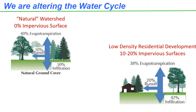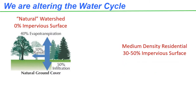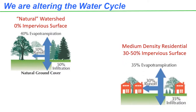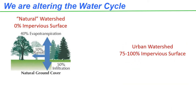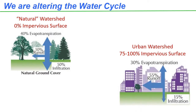In a low density residential development, like you'd see in a rural area, the proportion of rainfall that forms runoff is twice that of a natural watershed, and the percentage that infiltrates into the ground and evapotranspires back into the atmosphere is also reduced. With greater amounts of hard surfaces, the amount of runoff is higher still, while infiltration and evapotranspiration is lower. In an urban landscape, runoff is more than five times that in the natural watershed, and infiltration is less than one-third.